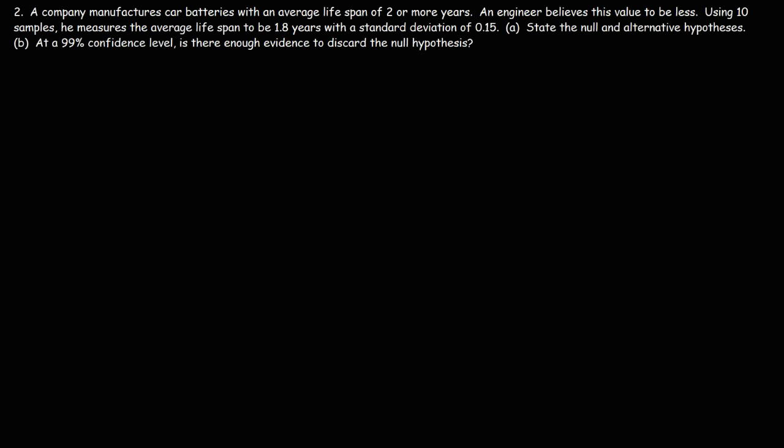Number two: a company manufactures car batteries with an average lifespan of two or more years. An engineer believes this value to be less. Using 10 samples, he measures the average lifespan to be 1.8 years with a standard deviation of 0.15. Part A: state the null and alternative hypotheses. The null hypothesis is that the mean is equal to or greater than two, since the company claims an average lifespan of two or more years.